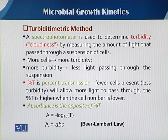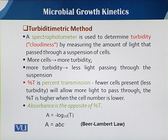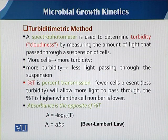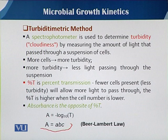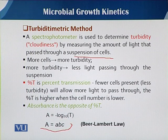Concerning the turbidity method: when growth happens, the number of cells increases, and due to this increase in cell number, the cell culture becomes turbid. Due to the turbidity, when we check on the spectrophotometer — which measures cloudiness — the spectrophotometer acts on Beer-Lambert law, as you can see in this slide. Beer-Lambert law measures the amount of light that passes through the suspension of cells.